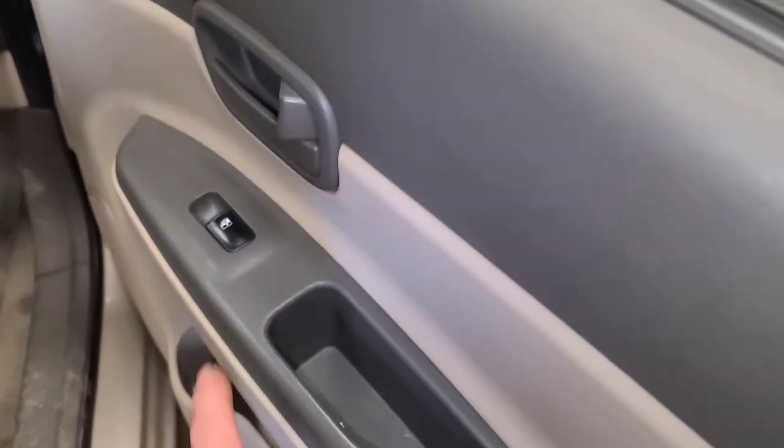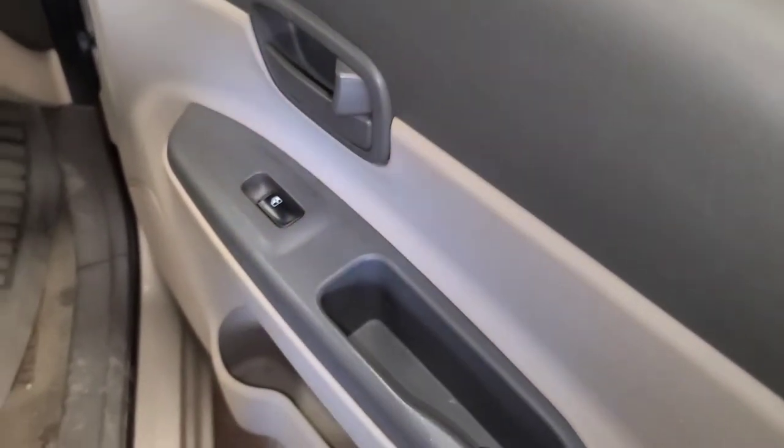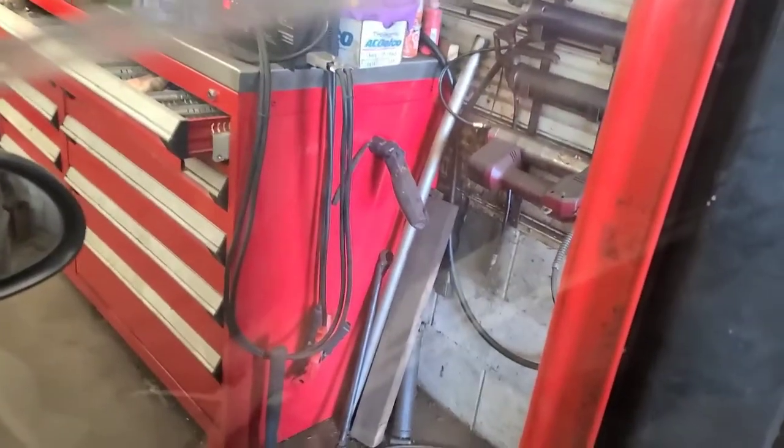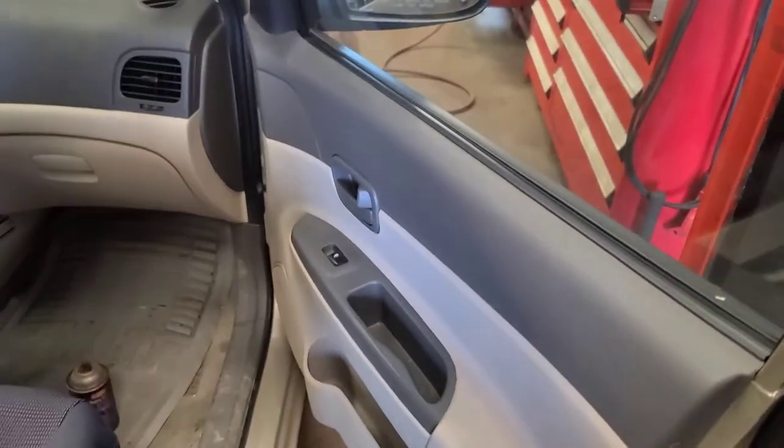So I'm starting to wonder if there's a problem with the switch or the wiring. Although it did roll down partially and stop, kind of like a window motor problem. Even if I push down on the motor on the window and try and roll it down, nothing happens. So we're going to look at the schematic.